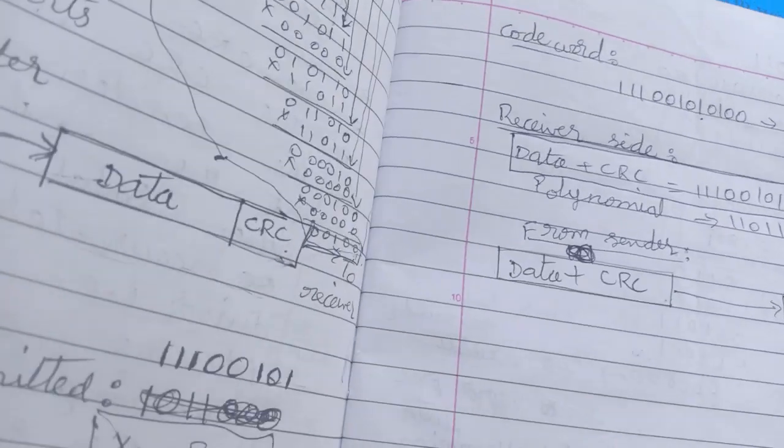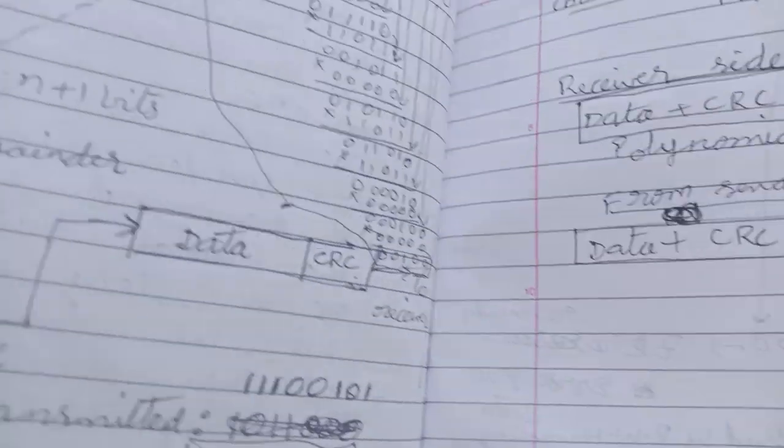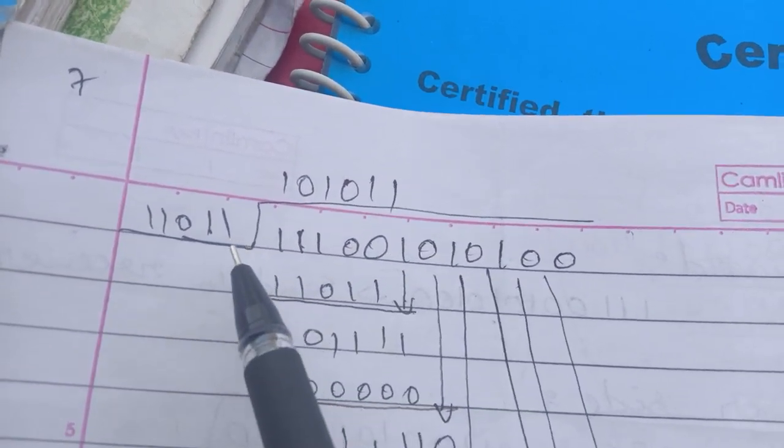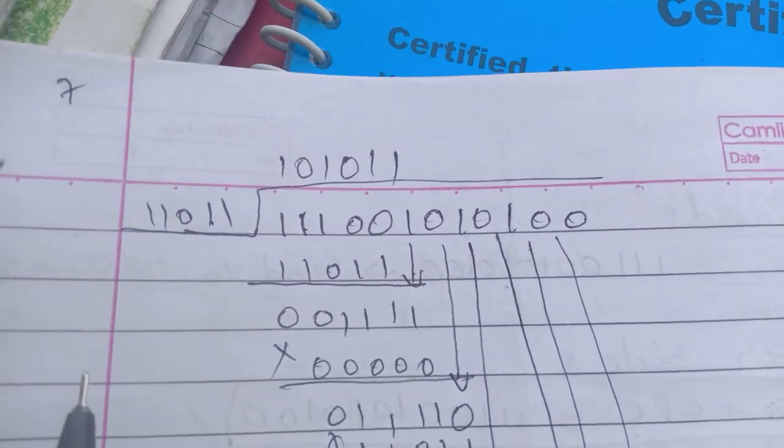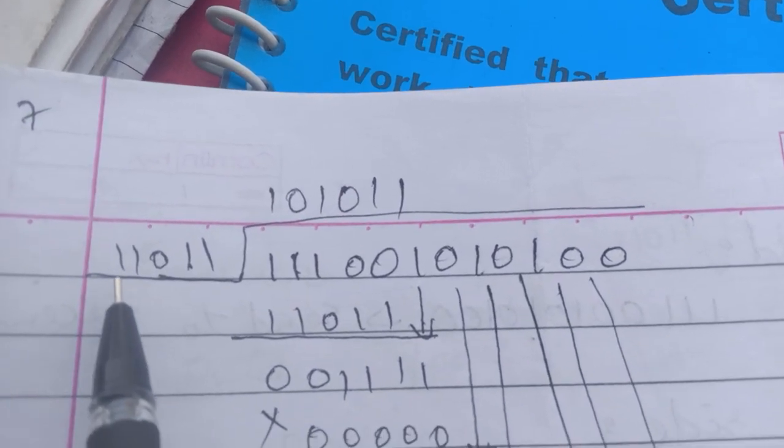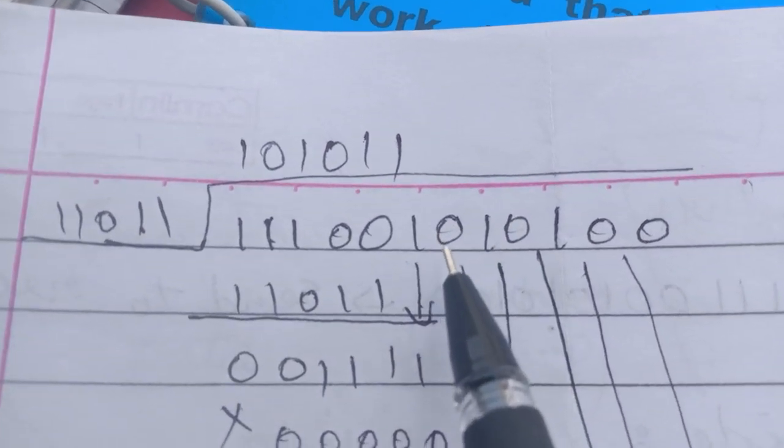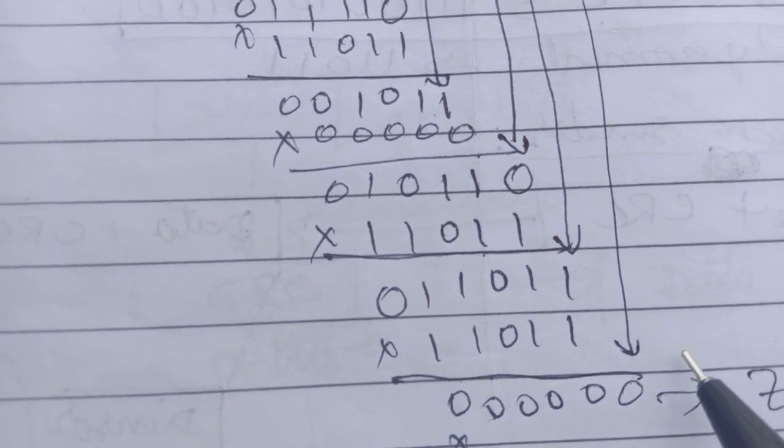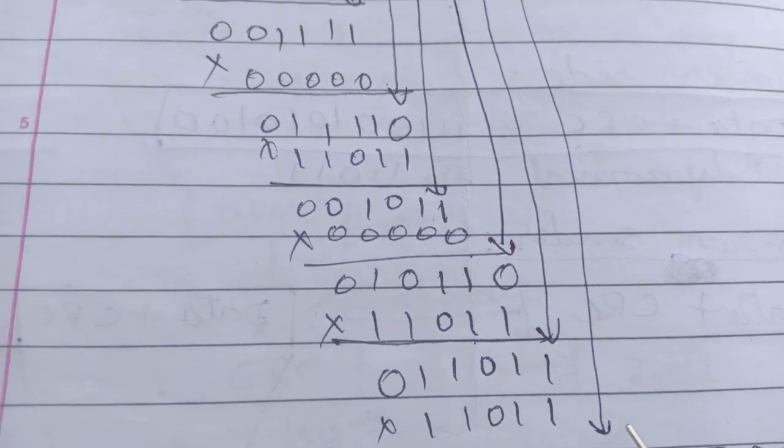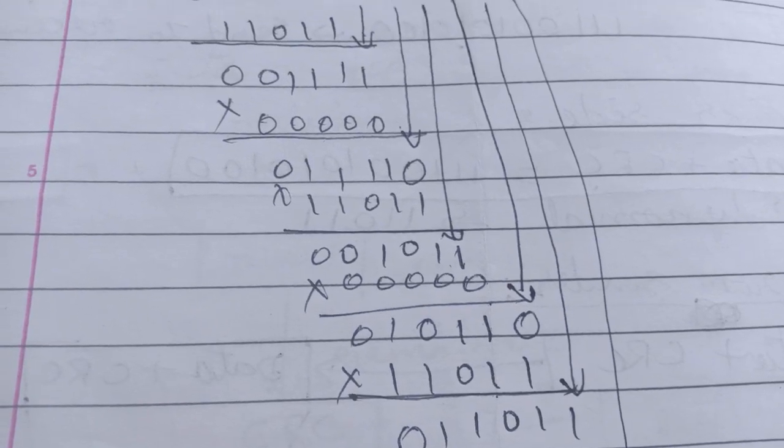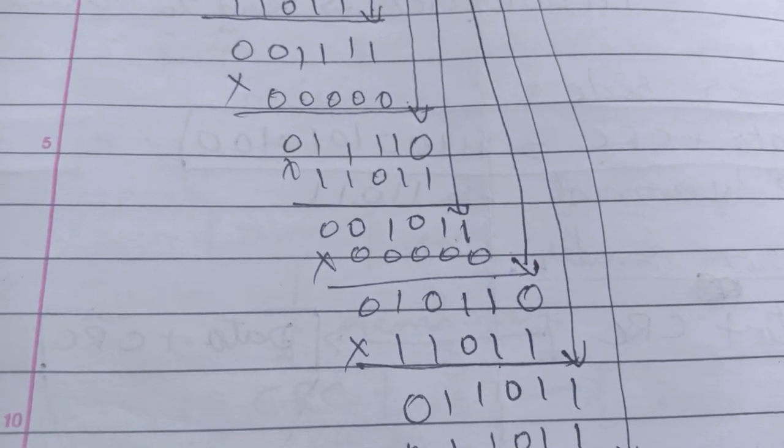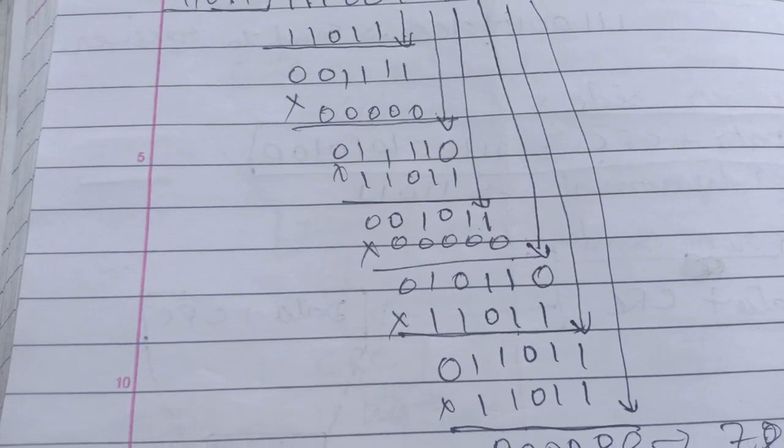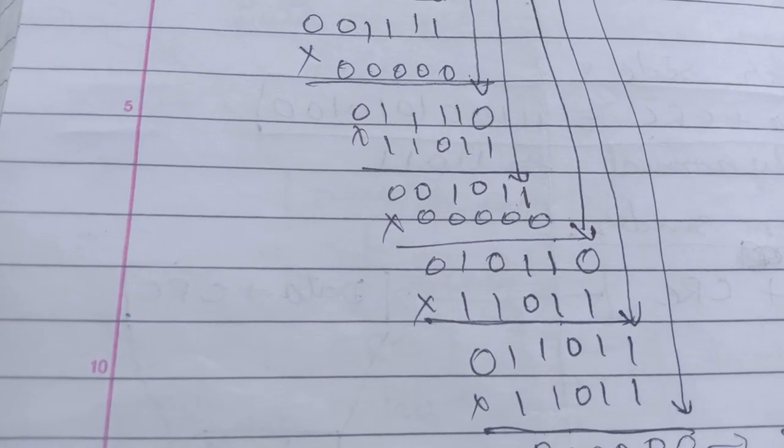Then at the receiving end, after receiving this digital data, it is again divided with the polynomial which is used at the transmitting section. After completion of this division, if the reminder is zero, then there is no error in the data transmitted. If we are getting any reminder, it indicates that the data contains error. Then the receiver will ask the sender to resend the data again.